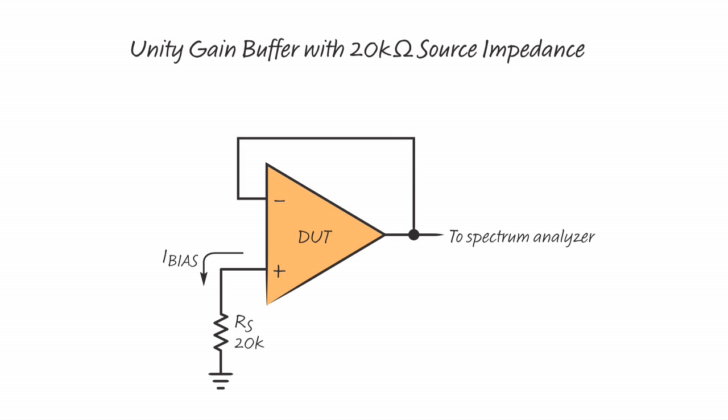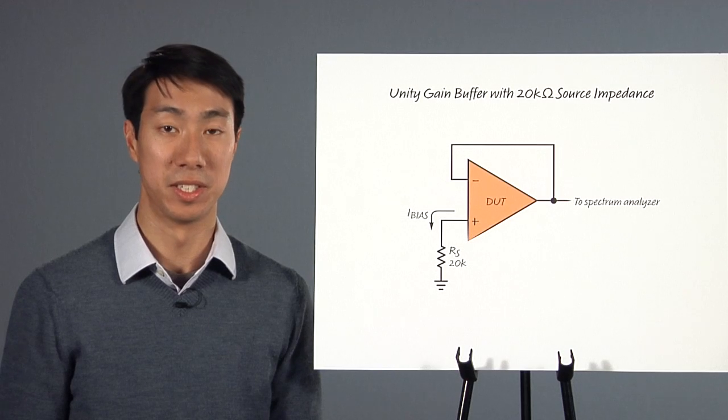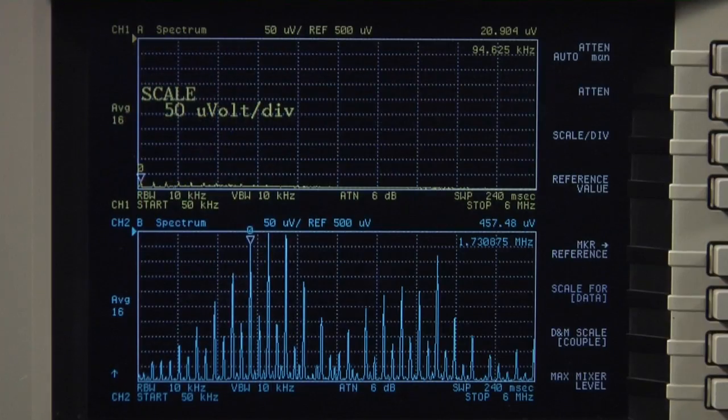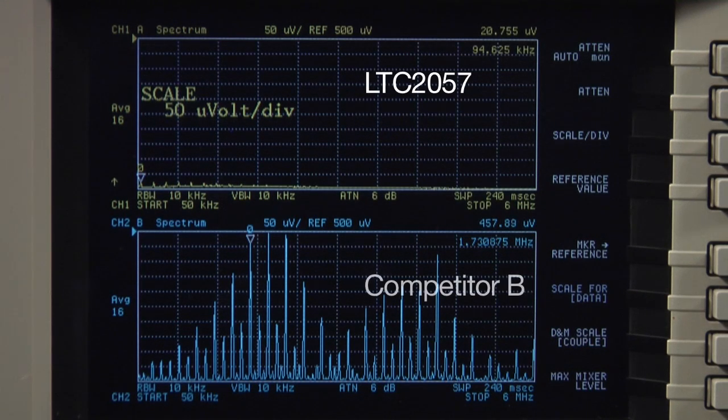Let's try adding some source impedance to our circuit to observe the clock feed-through phenomena. This is the same circuit as before, but I have added a 20k ohm resistor to each DUT's input. We are now comparing the LTC2057 to an amplifier from competitor B.